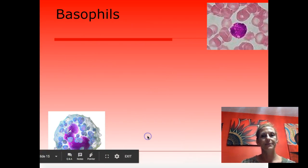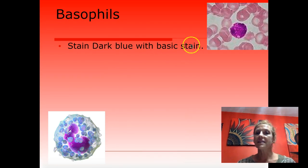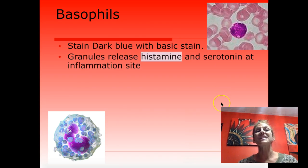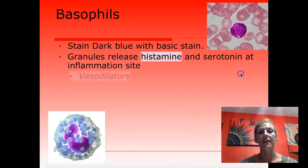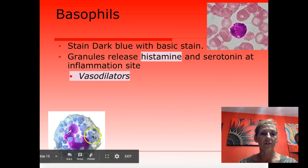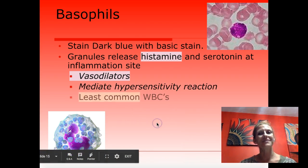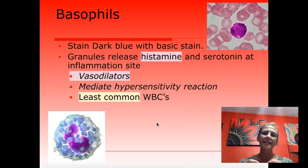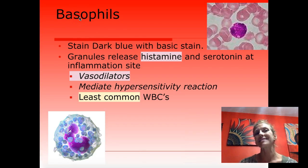Basophils stain with a basic stain. Looking at them, it appears as a mass of purple dots — you can barely see the nucleus inside because they are filled with coarse granules of histamine, which is a vasodilator, and serotonin. These are involved in hypersensitivity — a fancy word for allergies. Basophils are the least common of all white blood cells. A mnemonic: both histamine and basophils contain the letter 's'.